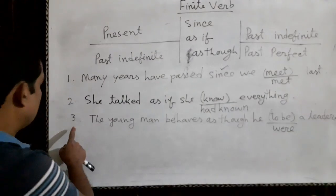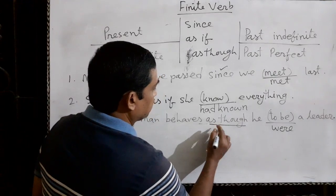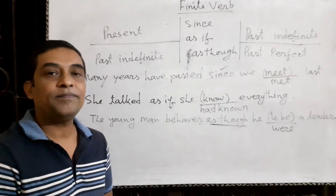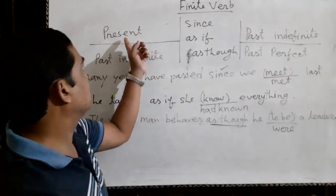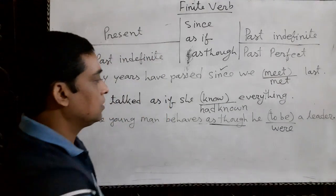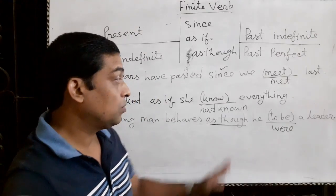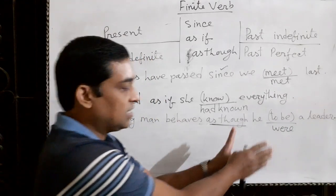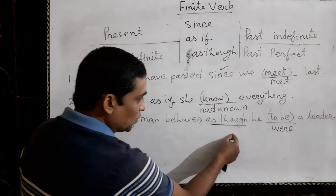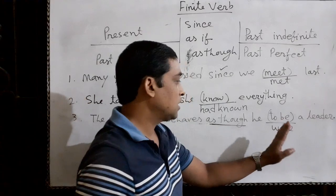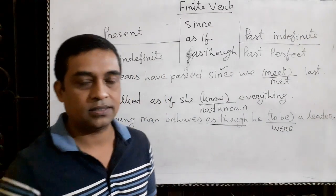Example number three uses 'as though.' The first clause is in present tense — present indefinite tense. Then the last clause will be in past indefinite tense. The correct answer here is 'were,' a to-be verb. The first form of the to-be verb is 'was' and 'were,' but in sentences like this we always write 'were.' The sentence is: 'The young man behaves as though he were a leader.' We always write 'were' here. In reality, after 'he' we would write 'was,' but in sentences like this we must write 'were' always. It is a kind of unreal past.